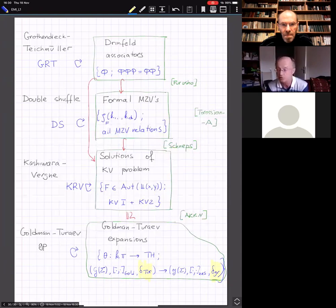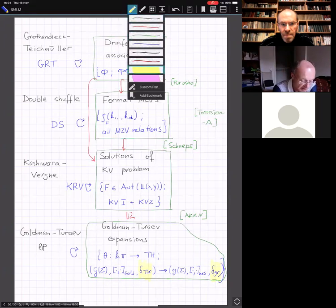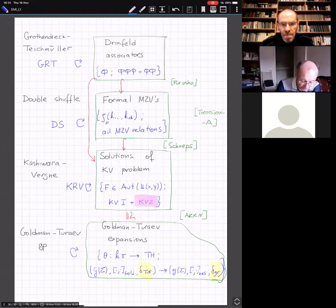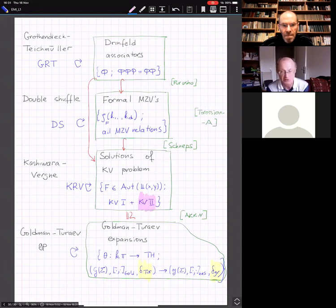Is it going to be mapped to delta graded or not? For now, let's say we define those Goldman-Turaev expansions as expansions which map the bracket to the bracket and the co-bracket to the co-bracket. It's clearly more restrictive. We don't know yet how much more restrictive, but it sounds interesting. The same thing happens on the KV side. We saw this KV1, a set of conditions on the automorphism of a free Lie algebra.